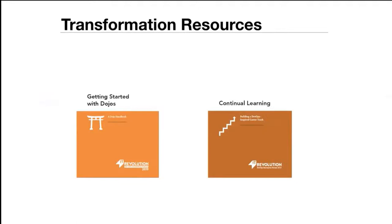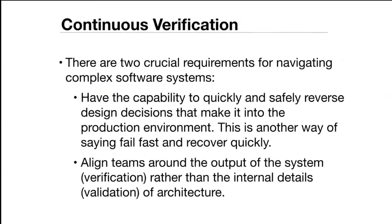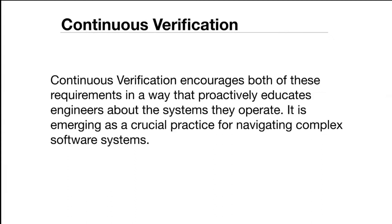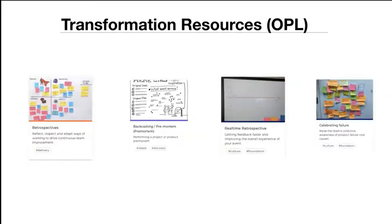Safe-to-fail practices include incident analysis — John Allspaw and Adaptive Capacity Labs are doing brilliant work on this — along with psychological safety, resilience engineering, and continuous verification. There are now vendors moving chaos engineering into continuous verification, particularly with Kafka, which is interesting. A new book by Casey Rosenthal and Nora Jones covers Netflix's chaos engineering work. That's also covered on the open practice library.